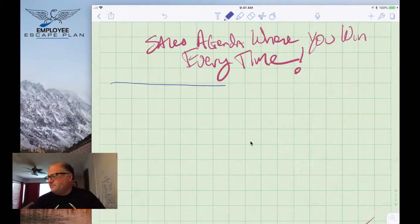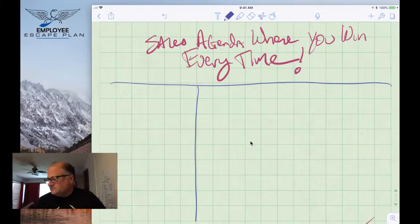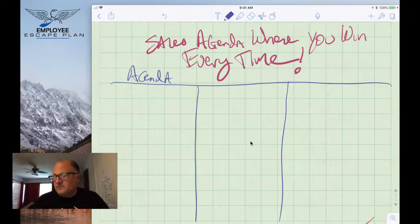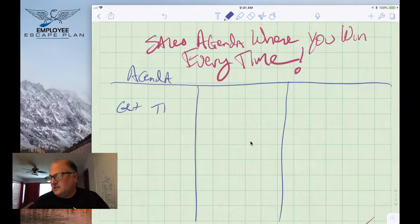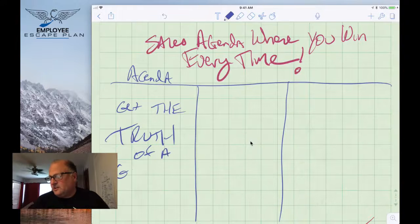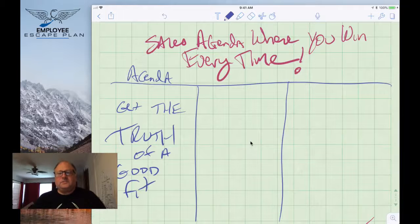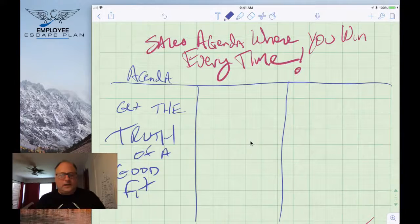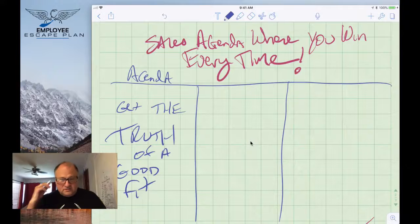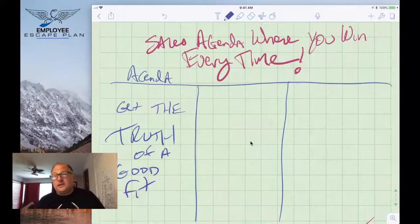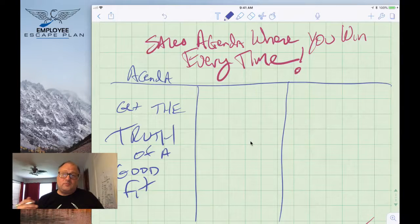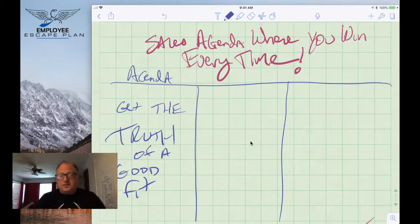What you want to do is have an agenda where you feel like you're walking away and winning every single time. How do we do that? It's a three phase process. First of all, we need to set the agenda. The agenda where we win every time is to get the big word here: truth. If the truth is they're a good fit, you win. And if the truth is they're not a good fit, you also win. Because every time you get the truth, you win. It's a little different mentality. Maybe I can help you, maybe I can't. If I can, great, that's the truth. If I can't help you, great, that's the truth. I wouldn't want to waste my time with somebody that I couldn't help.